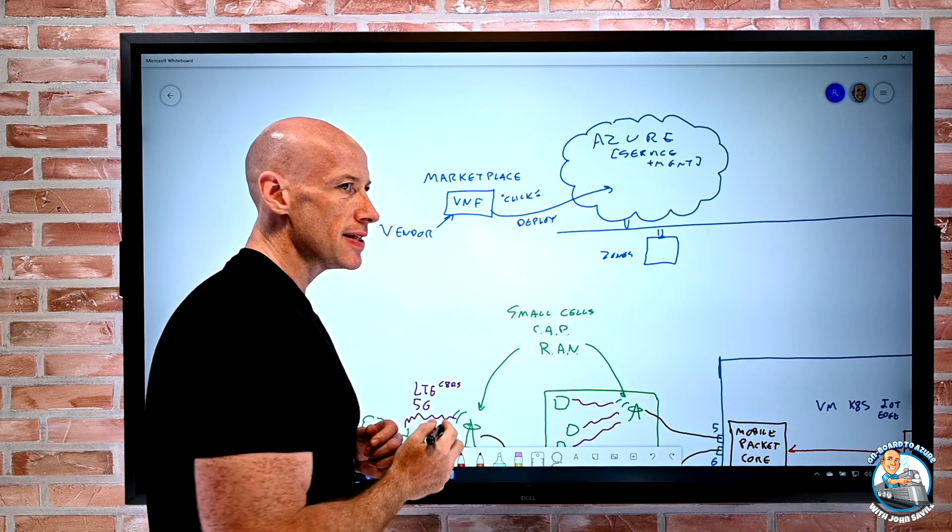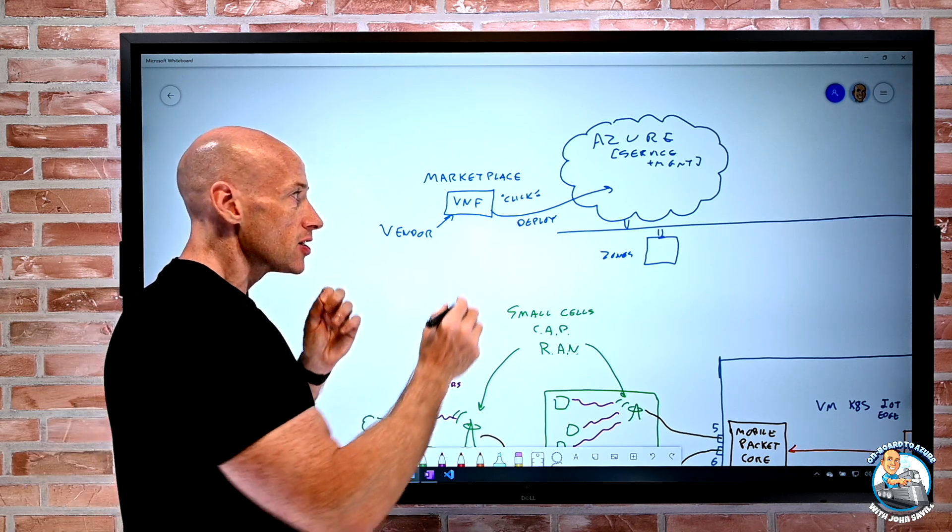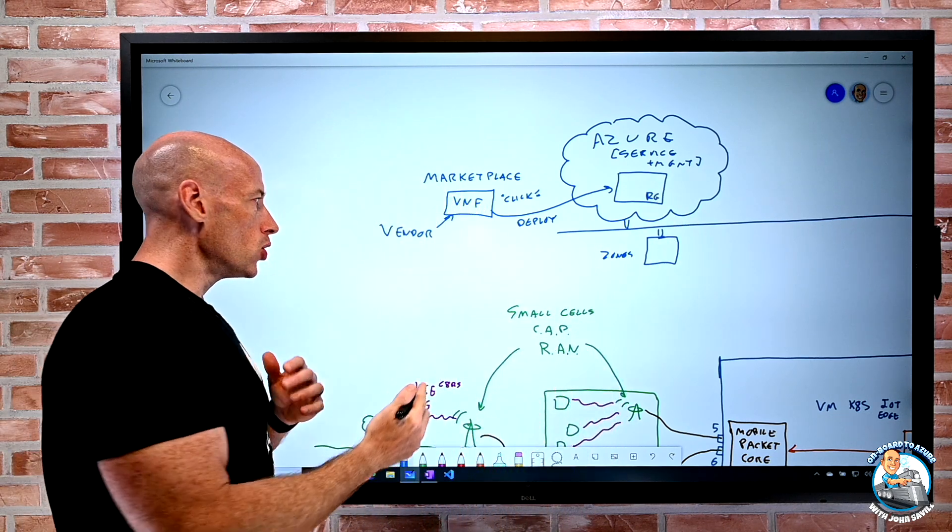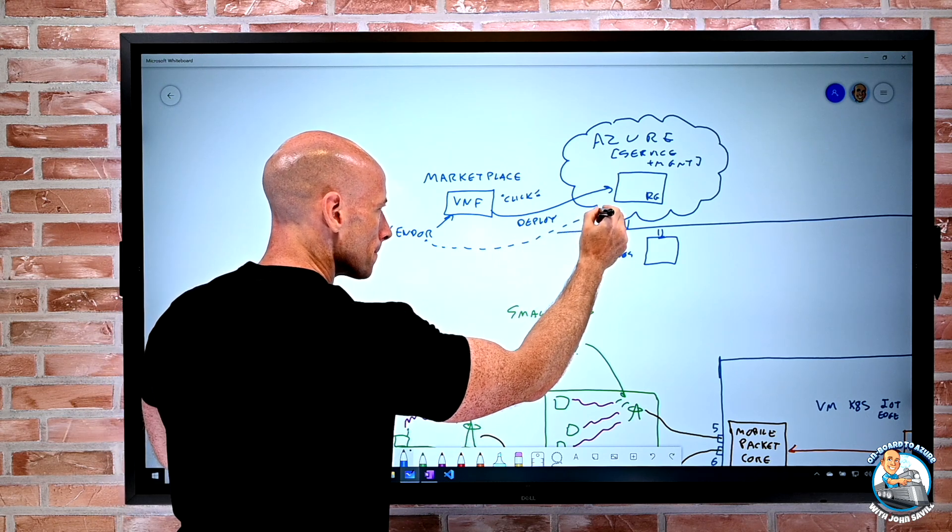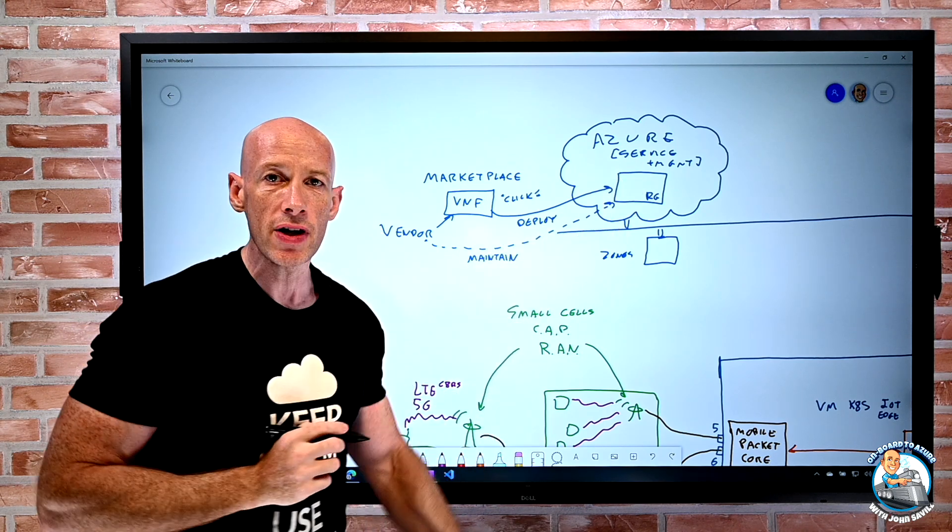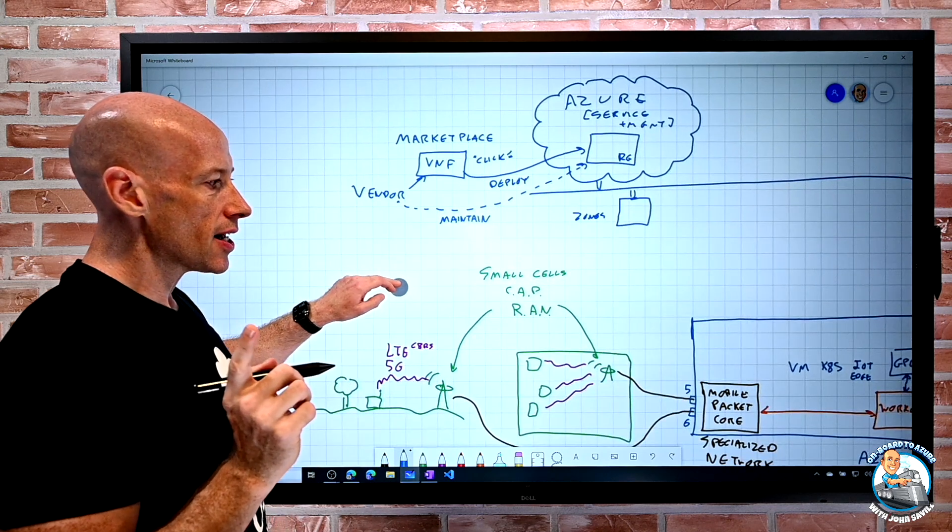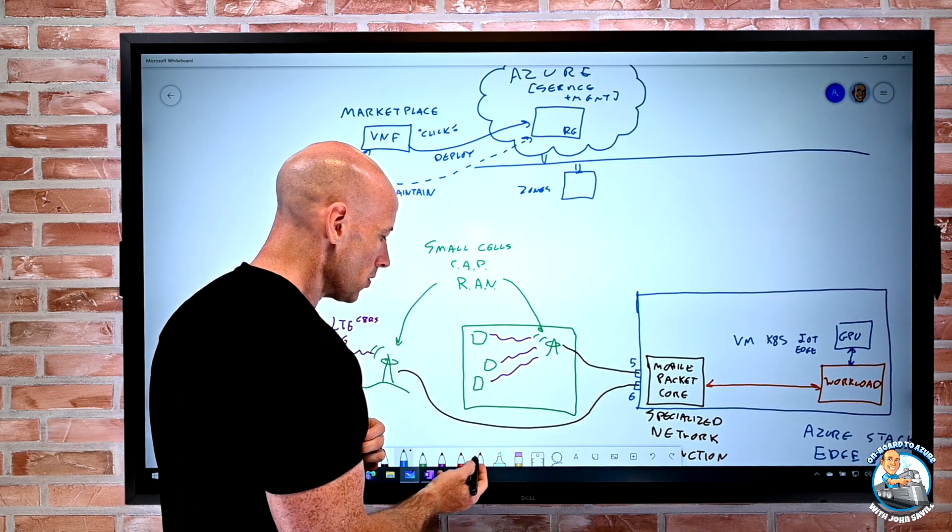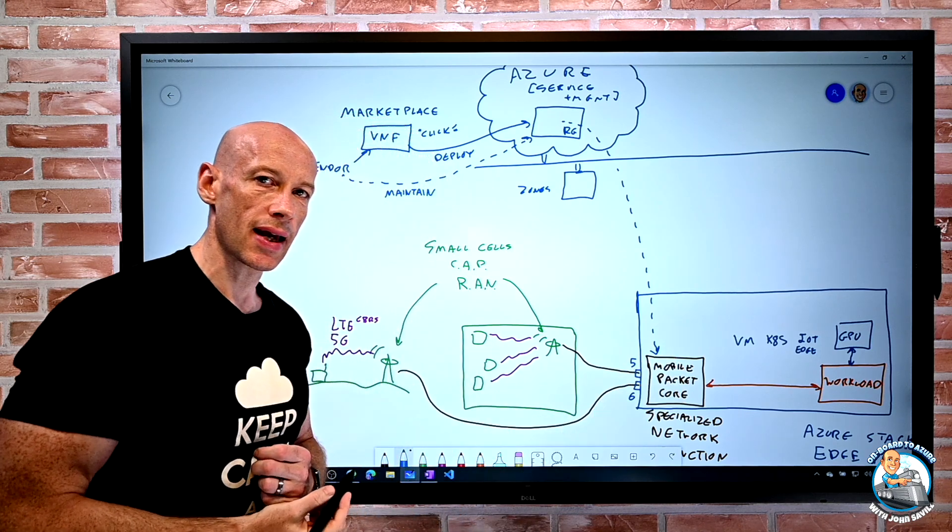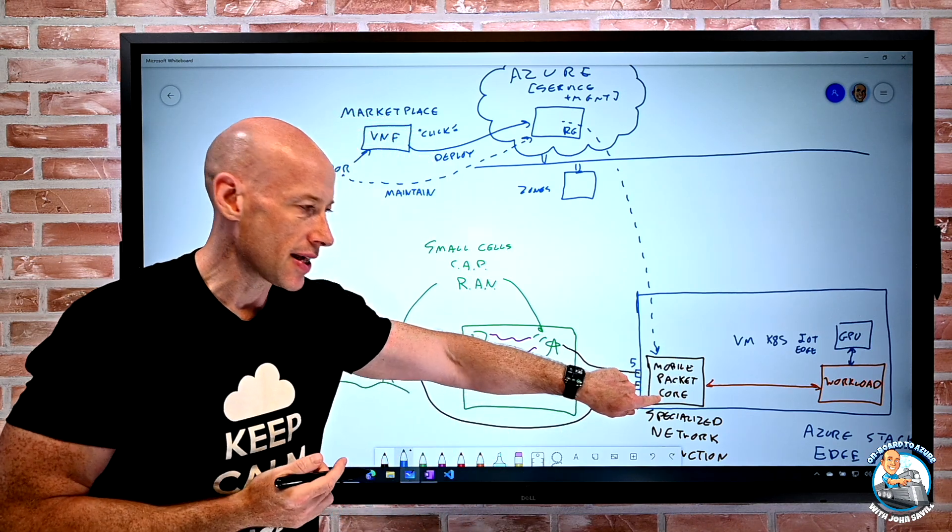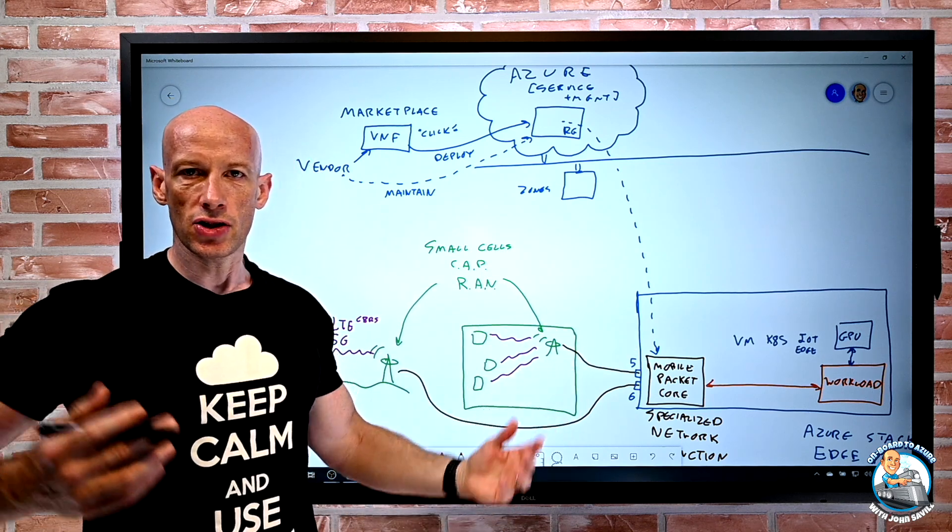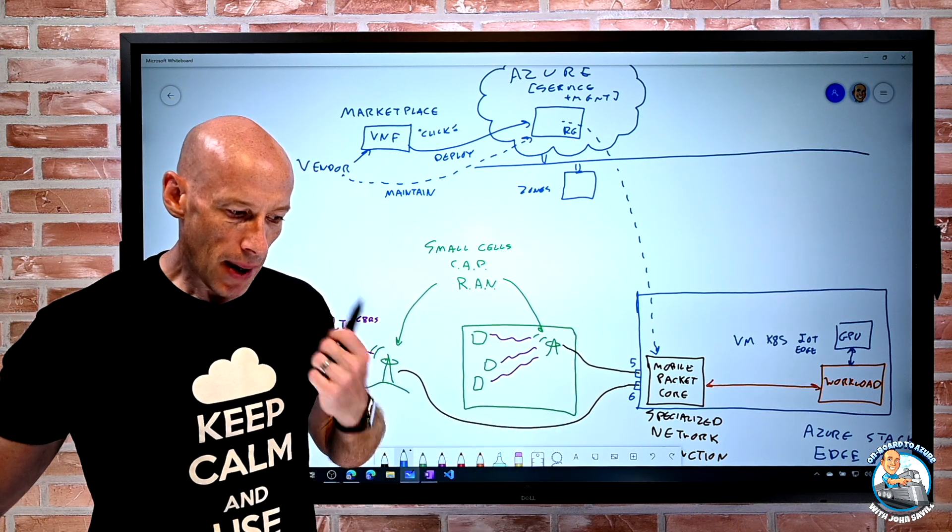Now what happens here is this is an Azure managed application. So when it does this deployment, it deploys into a special resource group. And what this actually lets it do is the vendor actually has this maintenance ability, this management for the things in the resource group. Now what it actually does when it deploys, you've probably guessed by now. It deploys actually onto my Azure Stack Edge Pro GPU. That's how I get the mobile packet core. It's deployed through the marketplace and gets deployed onto my Azure Stack Edge Pro GPU. So now I have the packet core.